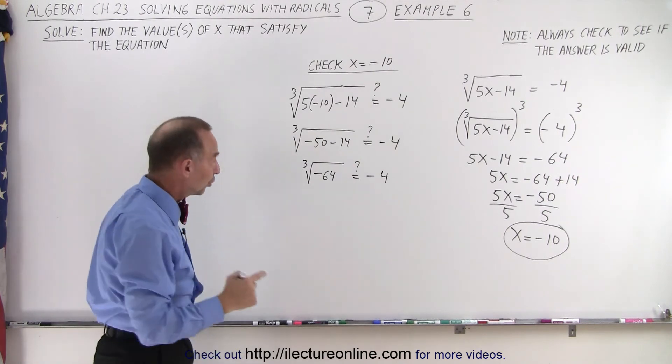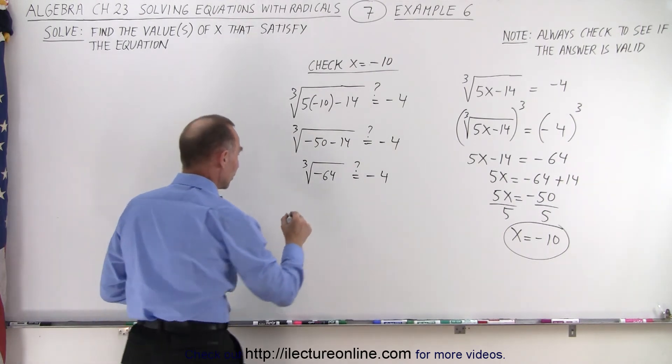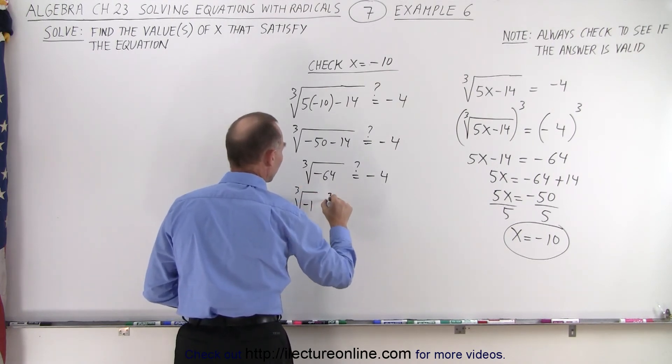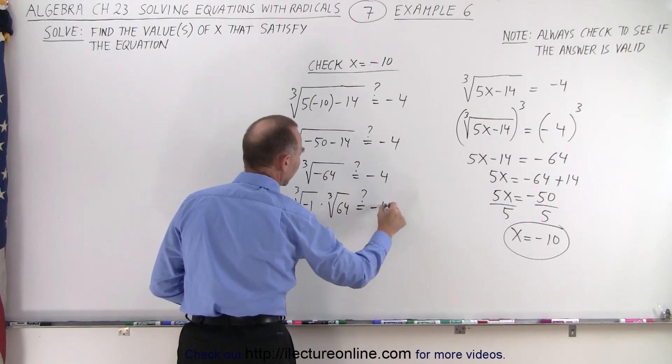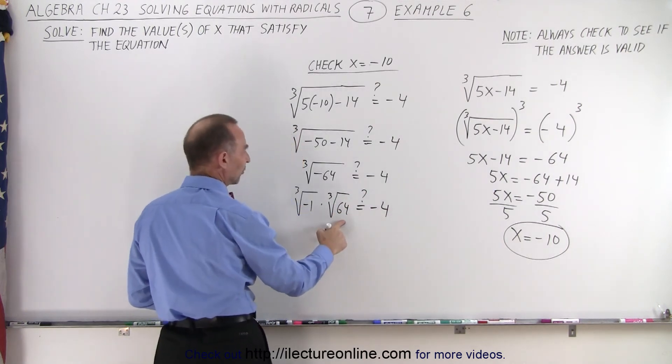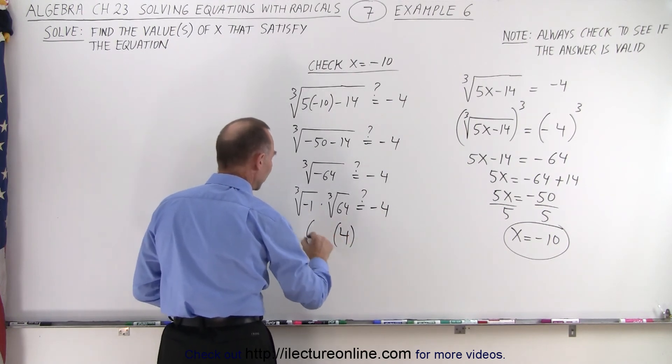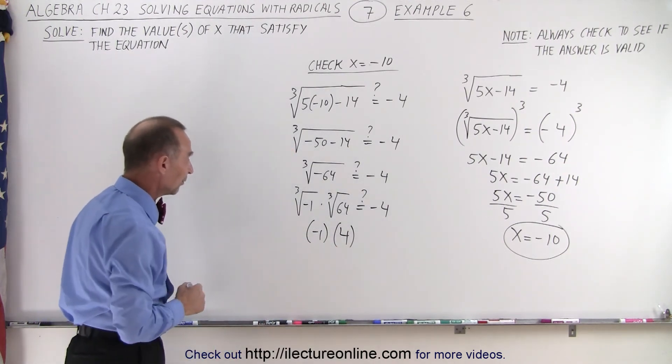Now notice that the cube root of 64 and the negative sign can actually be separated. We can say that this is the cube root of negative 1 times the cube root of 64. And is that equal to negative 4? Of course, the cube root of 64 is simply equal to 4. And the cube root of negative 1 is indeed negative 1, because negative 1 times negative 1 times negative 1 is indeed negative 1.